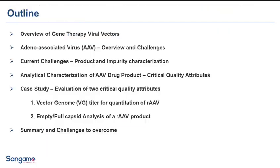This is the outline of my talk. I'm going to give you a brief overview of some of the gene therapy viral vectors used in the industry, focusing on AAV as one of the candidates for gene therapy viral vector delivery, including some overview and challenges. These challenges will include product and impurity characterization, critical quality attributes, and how we characterize them. I will use two case studies: one on vector genome titer and one on empty/full capsids, which are two highly contested critical quality attributes. I'll conclude with a summary of ongoing challenges.